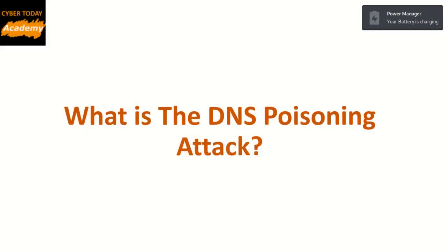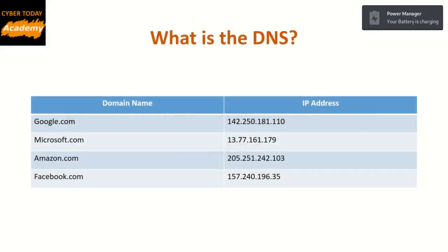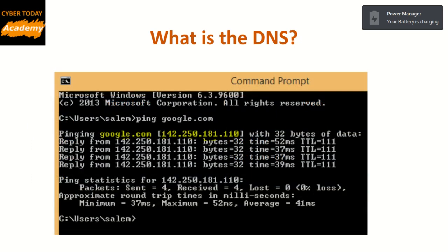Let's start with: what is the DNS? DNS, or domain name system, is essentially a directory that contains domain names like google.com and microsoft.com and their associated IP addresses. The main function of DNS is to translate domain names that people can understand into IP addresses which computers can understand. For example, if I ping google.com, my PC will know that google.com's IP address is 142.250.181.110. This happened using the DNS service.